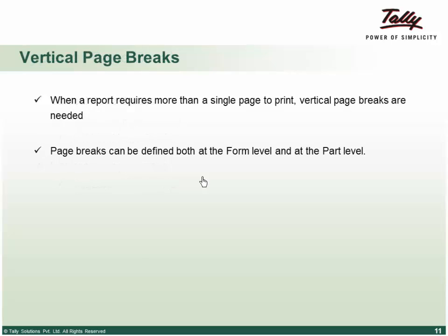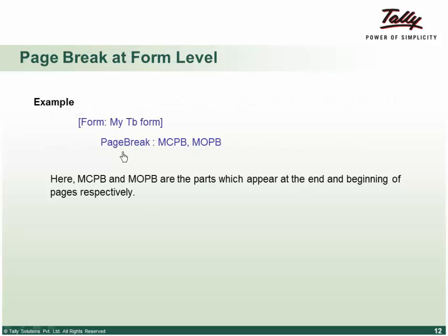When a report spans more than a single vertical page, page breaks can be defined at both form level and part level depending on the requirement. Page break first will be the closing break, then the opening break. The sequence — first closing then opening — is because when the first page is printed, the system doesn't need to know the opening. When the form is first closing, the closing break is required first. The sequence will always be maintained: closing page break first, then opening page break, at any definition level.